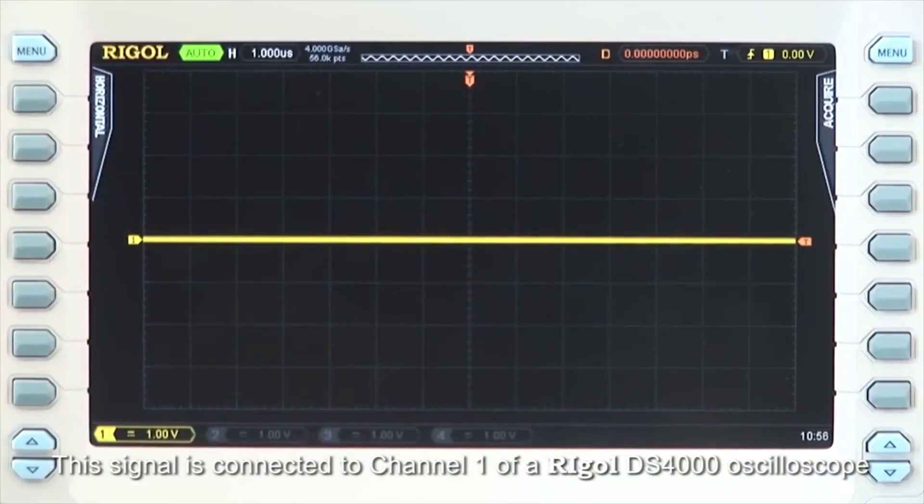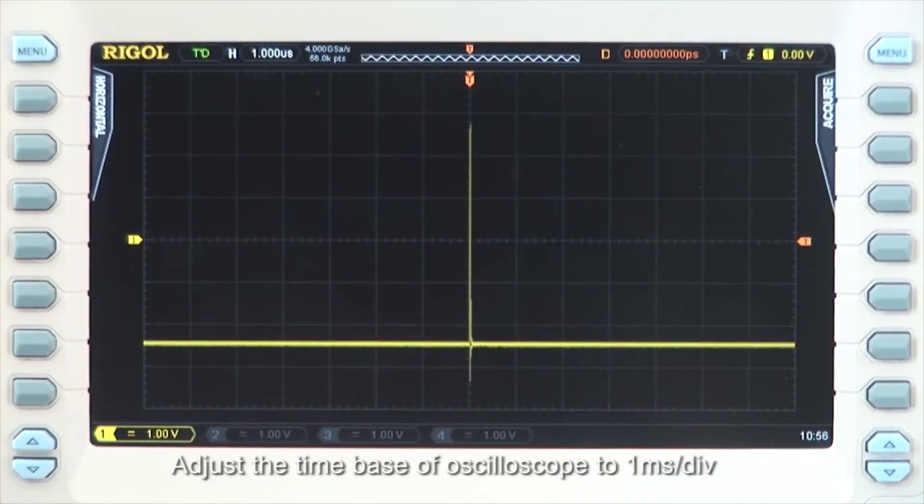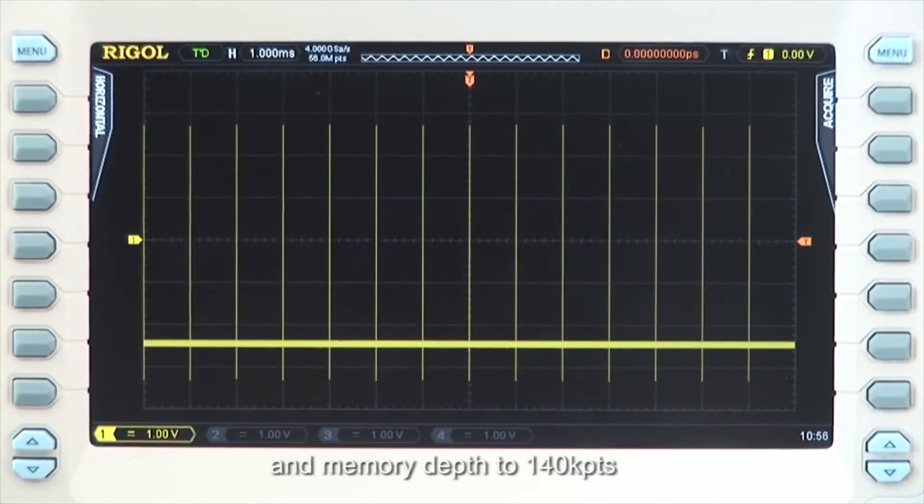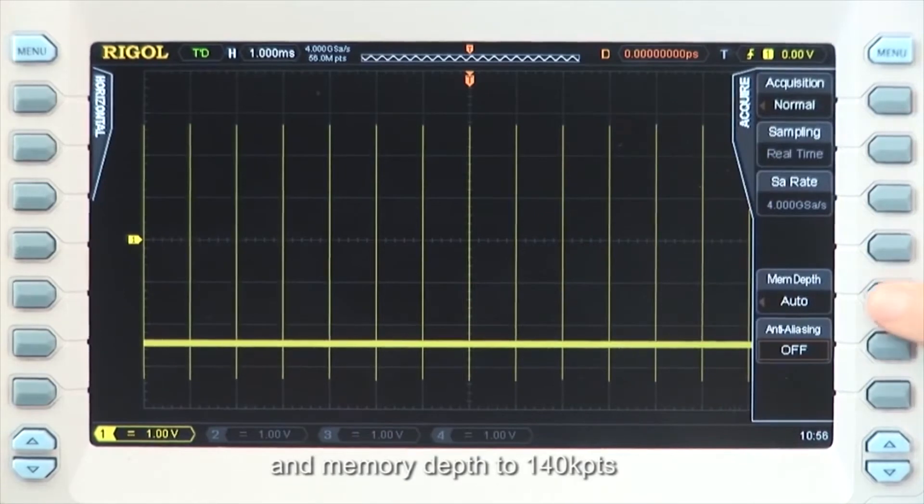The signal is connected to channel 1 of a Rigol DS4000 oscilloscope. Adjust the time base of the oscilloscope to 1 millisecond per division, the vertical scale to 1 volt per division, and memory depth to 140 kilopoints.